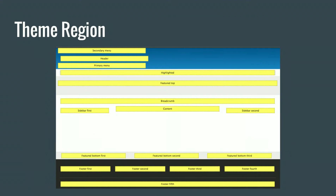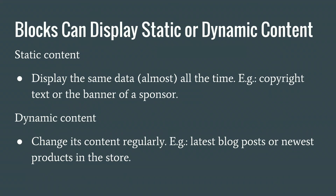Not all regions collapse out of the box — that depends on the theme. You have a theme that defines one or more theme regions, and in those theme regions, you place your blocks. Blocks can display static or dynamic content. Static content is something that is the same or almost the same every time — for example, a copyright text like '2016,' or a sponsor banner that you want to show on every page.